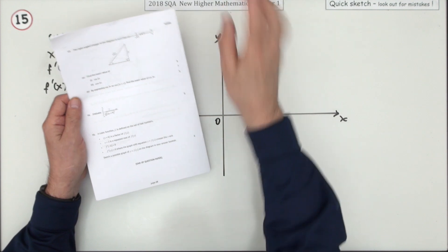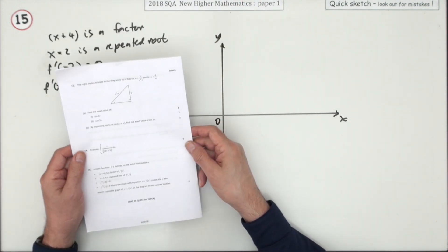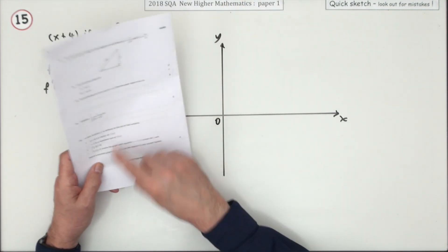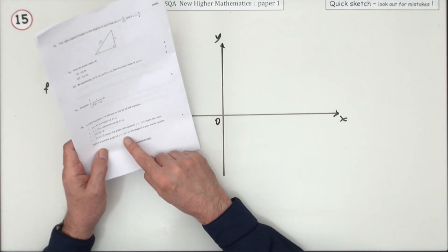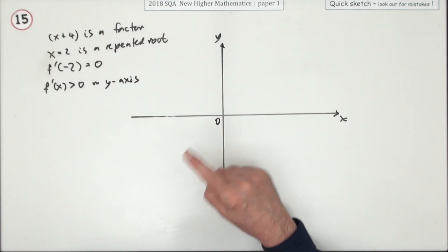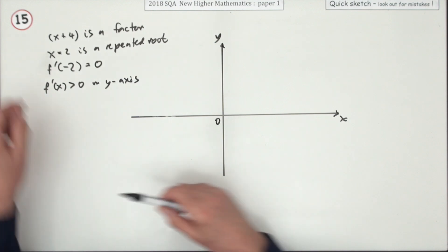Number 15, the last question on paper one of the 2018 New Higher, for four marks. This question gives you information about a function and you have to sketch what it might look like. We'll just take them one at a time.